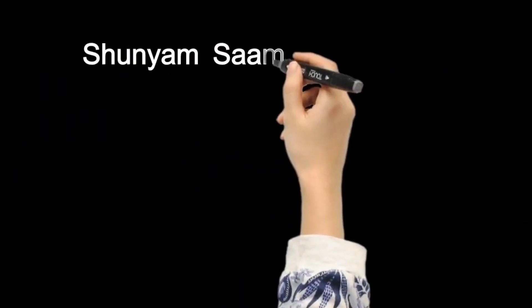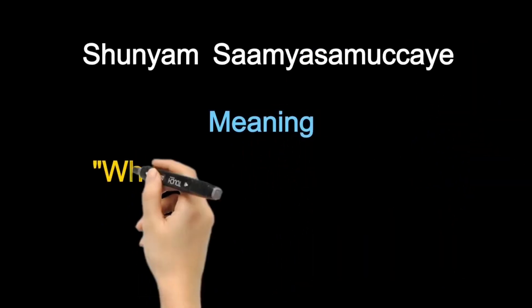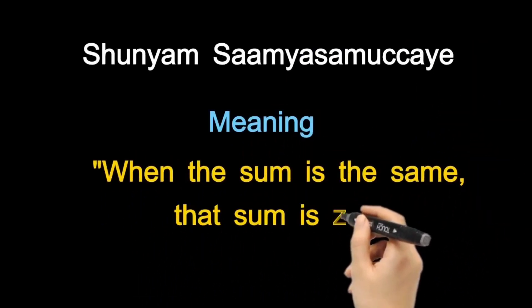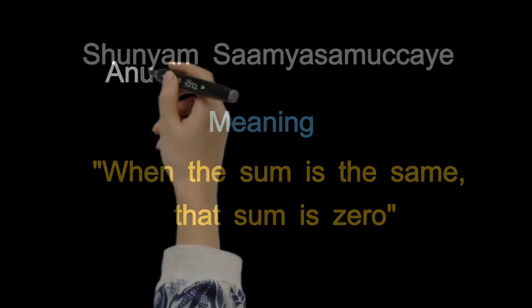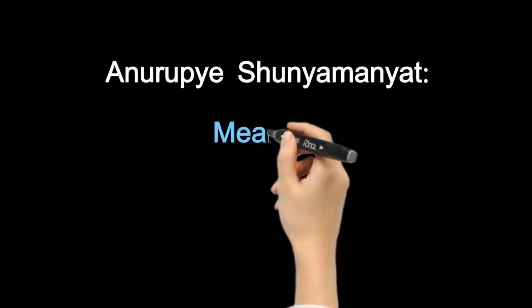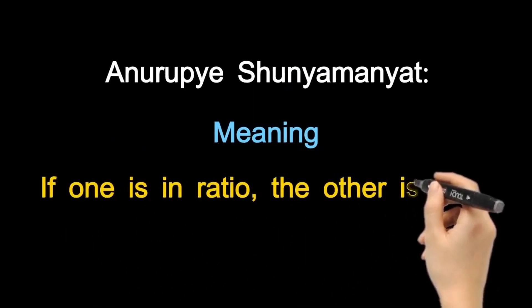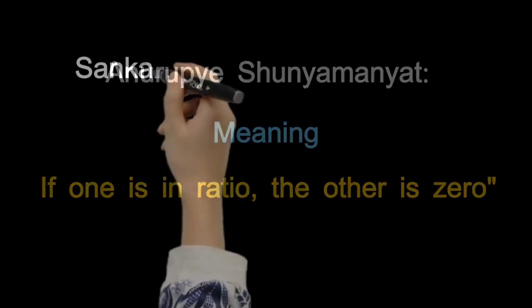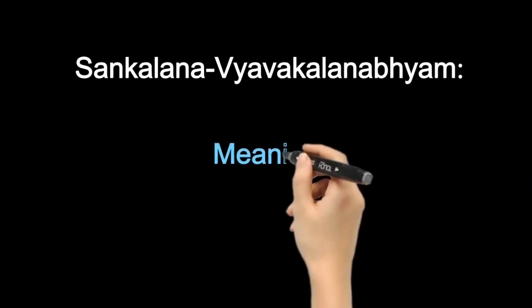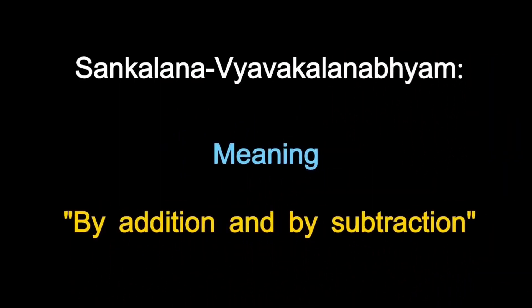Shunyam Samya Samakaya — meaning: when the sum is the same, that sum is zero. Anuripi Shunyamanyat — meaning: if one is in ratio, the other is zero. Sankalana Vyavakalanavayam — meaning: by addition and by subtraction.